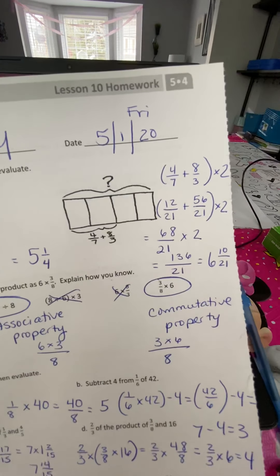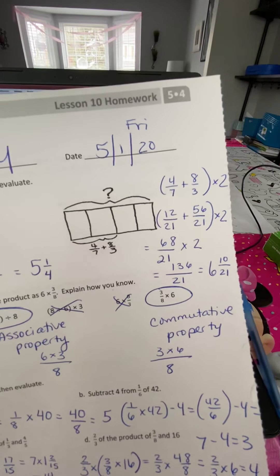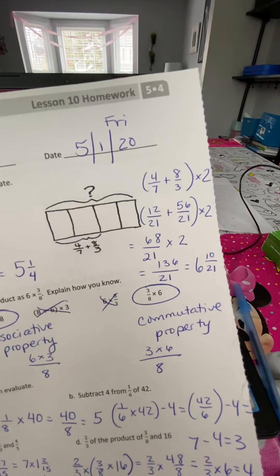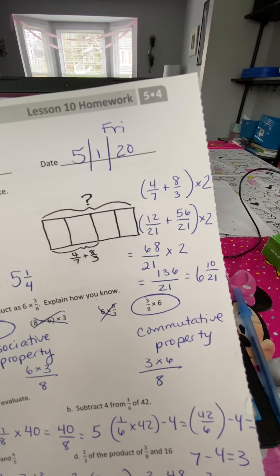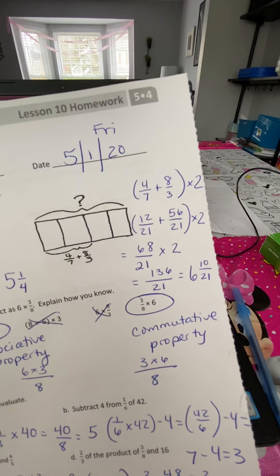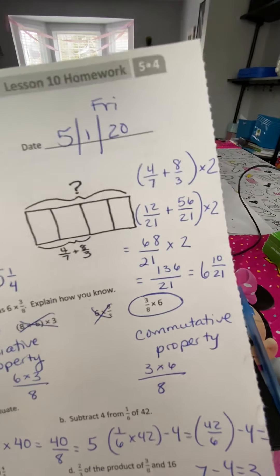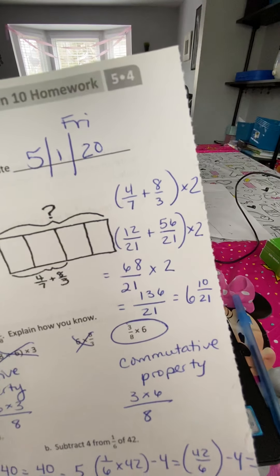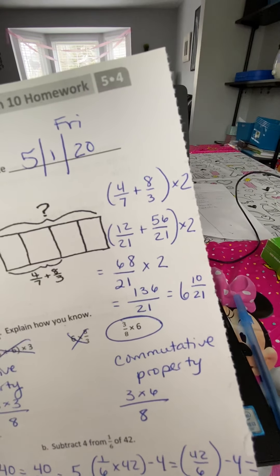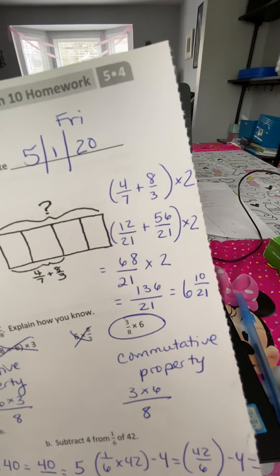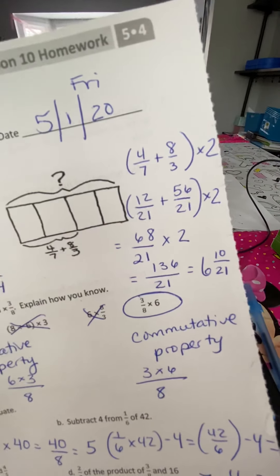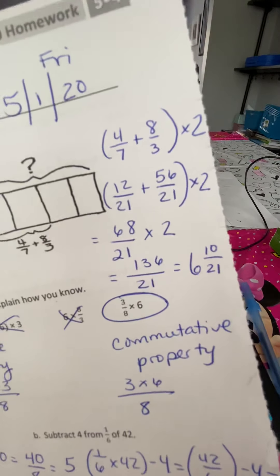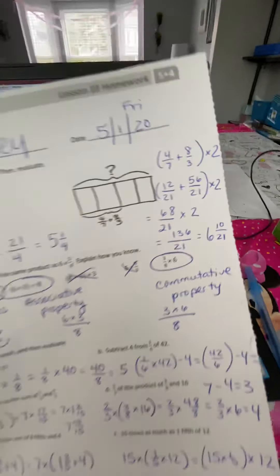Let's try this one. If that little section is 4 sevenths plus 8 thirds, you're going to multiply that times 2 because there are two pieces. When you multiply that times 2, you'll get 12 21sts plus 56 21sts times 2. They already found the least common denominator. After you do that, you'll do 68 over 21 times 2, and that will get you to 136 divided by 21. So once you do that long division, you'll have 6 and 10 21sts.